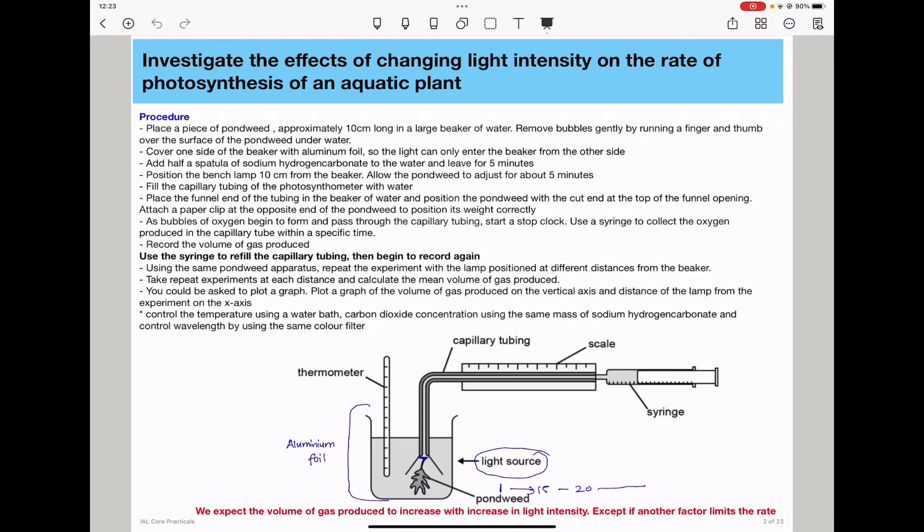So take repeat experiments at each distance and calculate the mean volume of gas produced. And if you are asked to plot a graph, plot a graph of volume of gas produced on the vertical axis because this is the dependent variable and the distance of the lamp from the experiment on the x-axis because this is the independent variable.